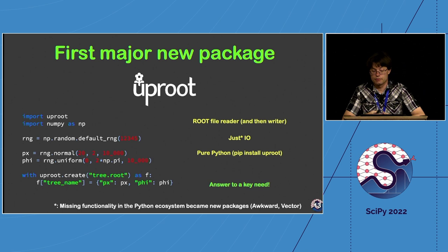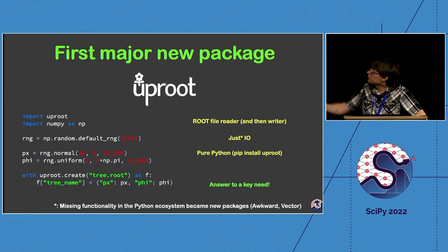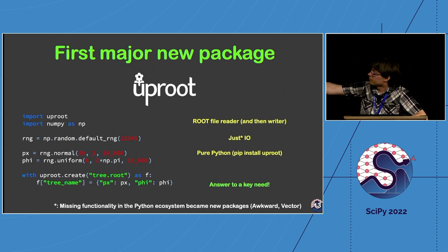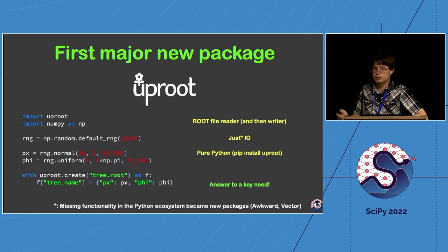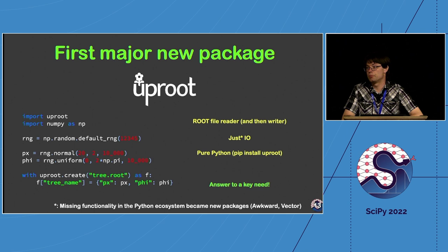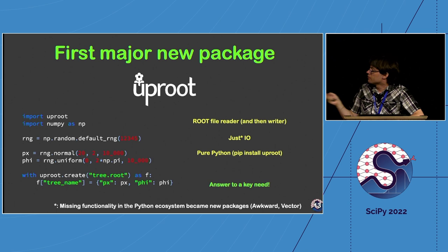Then came the first major new package part of scikit-hep: uproot. The code does exactly the same thing as the PyROOT example but in a much more Pythonic way — using NumPy arrays, a with block, and simply assigning data structures in to create a ROOT file. Uproot was both a reader and writer for ROOT files, written in pure Python. This was a huge game changer because it meant you could just pip install something and open ROOT files in Python, without spending hours building ROOT and tying it to a specific Python version.